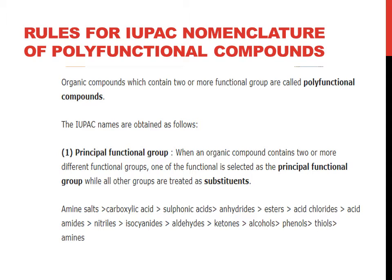The series to determine which group will be principal and which will be substituent is: amines, carboxylic, sulfonic, anhydrides, esters, acid chlorides, acid amides, nitriles, isocyanides, aldehydes, ketones, alcohols, phenols, thiols, amines.